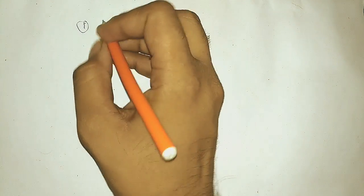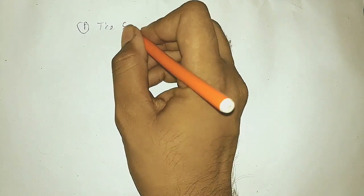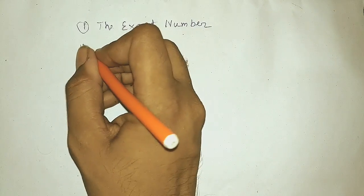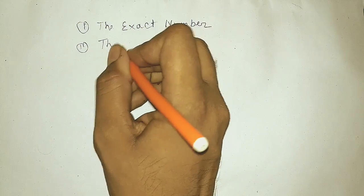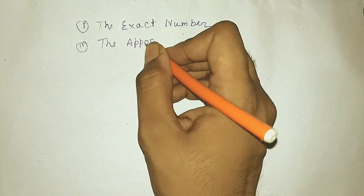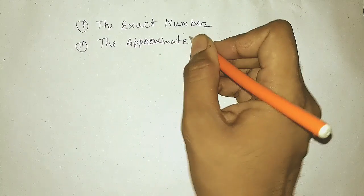Hello guys, today our topic is error. To know about error, first we need to know two things: number one, the exact number, and number two, the approximate number. So what is the exact number and why do we approximate it?